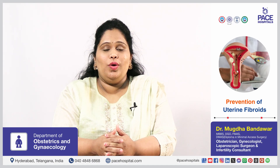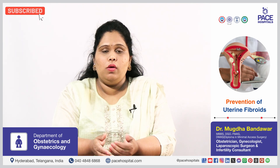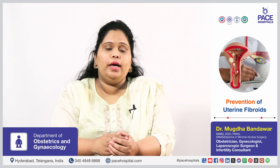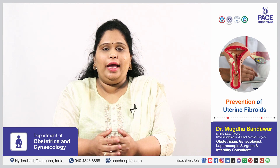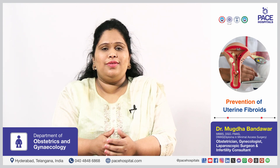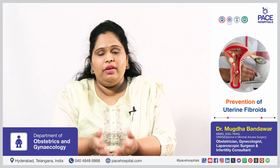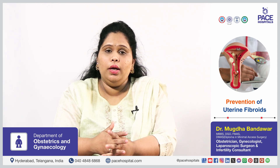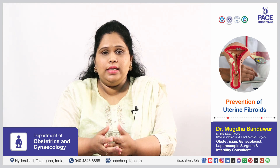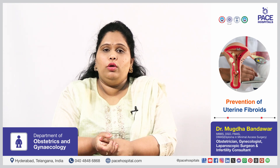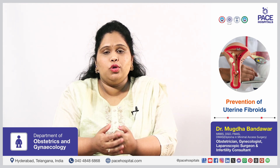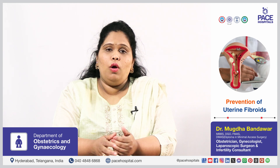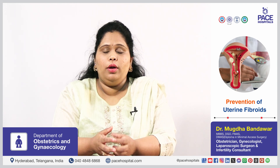There is no exact way to prevent fibroids because the cause is unknown, and it can run in the family. However, there are some things we can actively do, like lifestyle management. Controlling proper diet and exercise can help manage the hormonal imbalance in your body. Early detection is also very important — if you are a known case or at increased risk, getting an ultrasound done every 1 to 2 years can help prevent long-term complications of a grown or big fibroid.